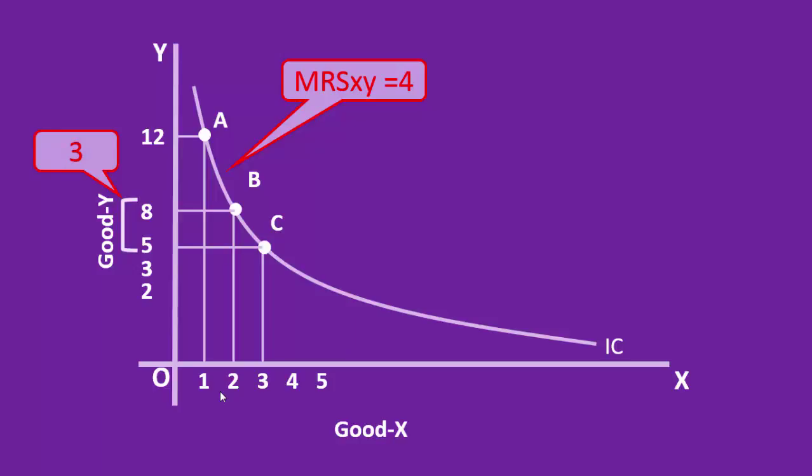After this exchange, his new combination C contains five units of good y and three units of good x. In the BC segment of the indifference curve, the marginal rate of substitution of x for y is three. It diminishes from four to three.